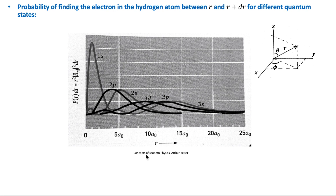Note that for the 2s state, the most probable location of the electron is not simply 4a₀ as predicted by Bohr. The Bohr prediction of radius 4a₀ applies for the 2p state, and the prediction of 9a₀ applies to 3d, not to 3p or 3s. It turns out the Bohr model predicts the most probable location for the electron in only one of the several possible states for a given principal quantum number n.